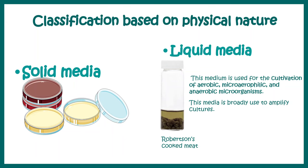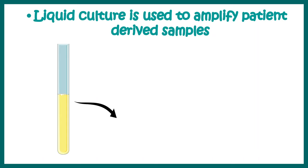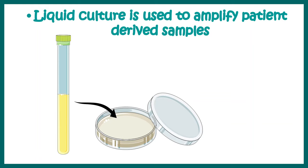We can also classify media based on their physical nature. Some frequently used media are solid, generally in a plate with agar added. Other media are liquid and don't contain agar, so they don't solidify — Robertson's cooked meat is one such example, used for cultivation of aerobic or anaerobic microorganisms. The benefit of liquid media is that if you have a very small patient sample, like a small swab, you can dip it in liquid culture media, allow it to grow, and then inoculate onto a solid plate for growth and isolation of specific bacteria.